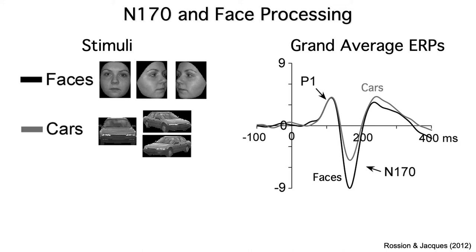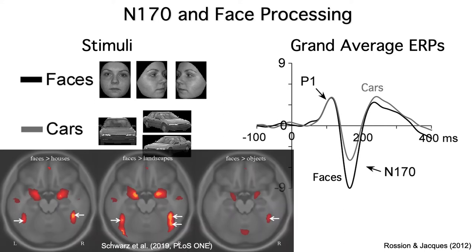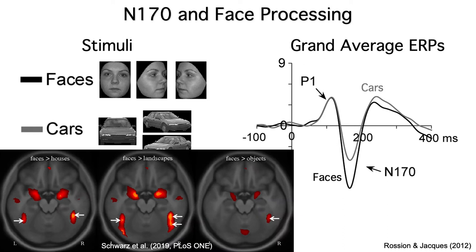As you can see, the N170 wave — the negative deflection that peaks at around 170 milliseconds after stimulus onset — was much bigger for the faces than for the cars. Many studies have found similar results; faces generate a larger N170 than just about any other stimulus category. fMRI studies have also found that faces generate larger BOLD responses than most other stimuli in certain brain areas.